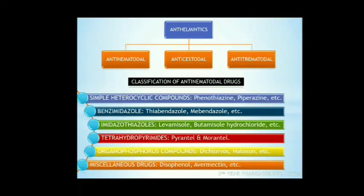Classification of anthelmintics. They are broadly classified into anti-nematodals, anti-cestodals, and anti-trematodals. Anti-nematodals act on nematodes or roundworms; anti-cestodals act on tapeworms; anti-trematodals act on flatworms or flukes. Classification of anti-nematodal drugs: simple heterocyclic compounds including phenothiazine and piperazine; benzimidazoles including thiabendazole, mebendazole, and fenbendazole; imidazothiazole group including levamisole, butamisole hydrochloride, and tetramisole hydrochloride; tetrahydropyrimidines including pyrantel and morantel; organophosphorus compounds including dichlorvos and haloxon; and miscellaneous nematocidal drugs including disophenol and ivermectin.